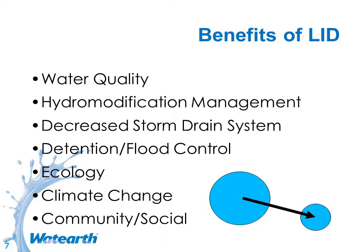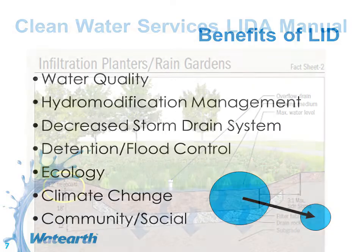Low-impact development can help with stream erosion and hydromodification management by addressing excess runoff volume. Any time land is developed, we have more runoff volume than in an undeveloped condition. Detention does a great job of meeting peak flows for the events we analyze, but it doesn't address the excess runoff volume, and that excess runoff volume can contribute to erosion issues.